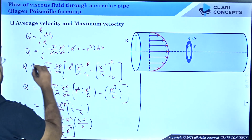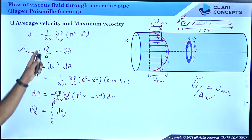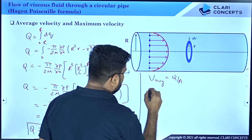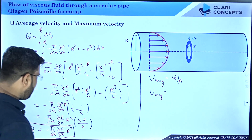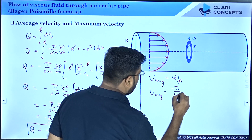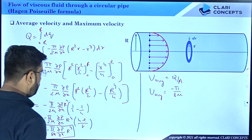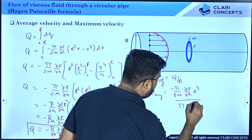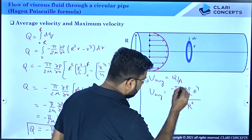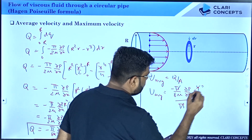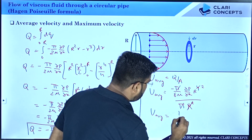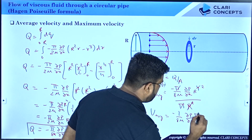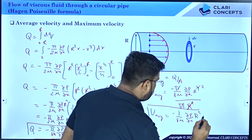The objective is to find U_average = Q/A. So U_average = [−(π/8μ)(∂P/∂x) R⁴] divided by A, where A = πR². The π cancels and R⁴/R² = R², giving: U_average = −(1/8μ)(∂P/∂x) × R². This is your average velocity formula.